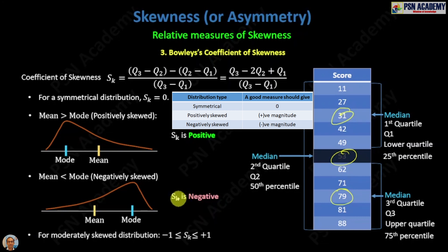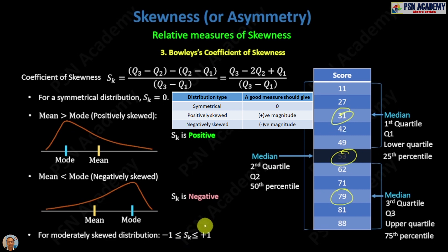Regarding the range, for a moderately skewed distribution this measure will lie between minus one and plus one. That covers Bowley's coefficient of skewness. In the next video we will discuss Kelly's coefficient of skewness, which is the last relative measure of skewness.